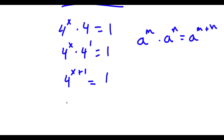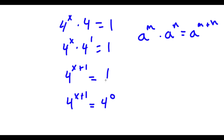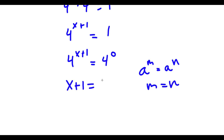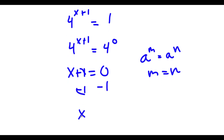Now 1 we can rewrite as 4 to the power of 0, because anything to the power of 0 is 1. And since a to the power of m equals a to the power of n means m equals n, in this case x plus 1 is equal to 0. To solve this, I subtract 1 from both sides and get x is equal to negative 1.